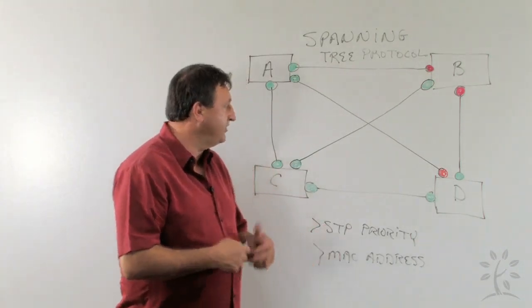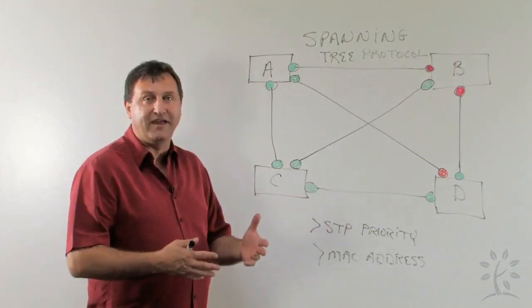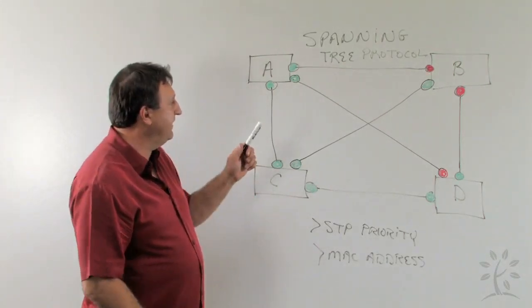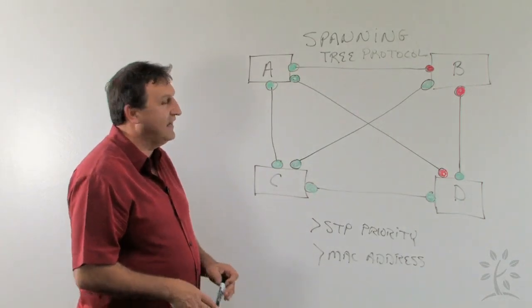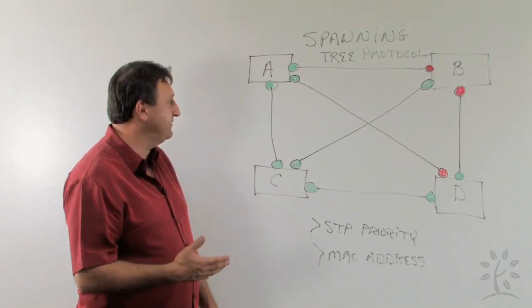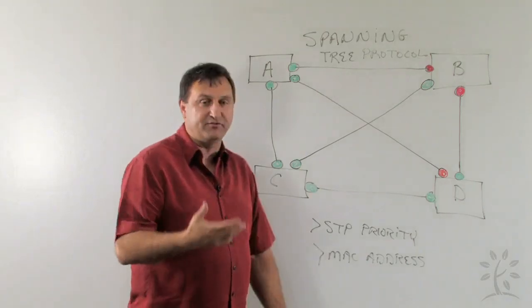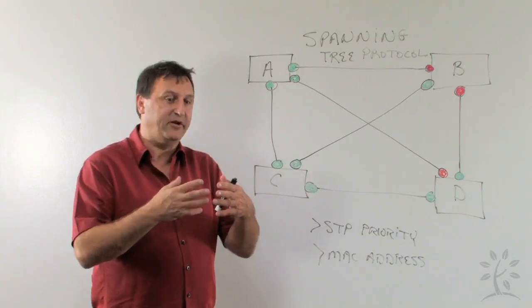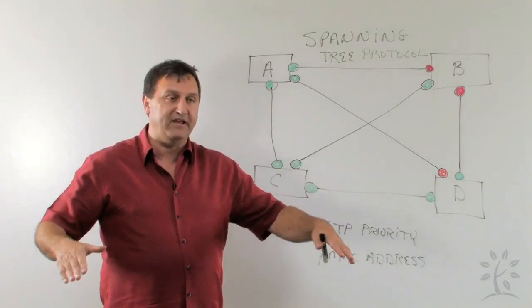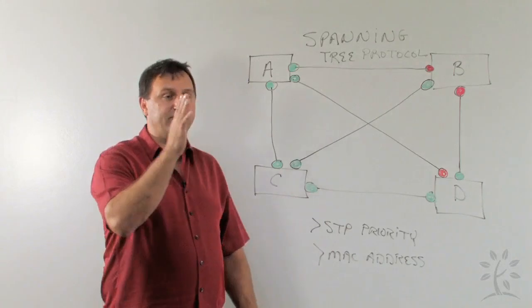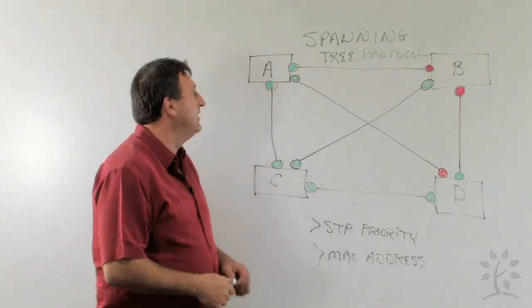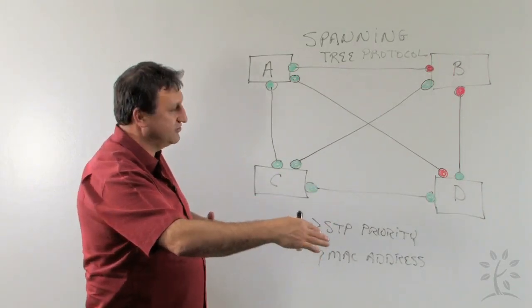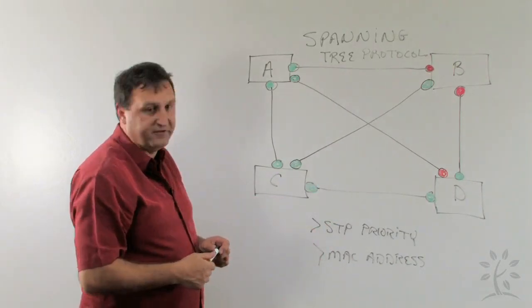So basically that's what Spanning Tree does for us. It provides for redundancy while preventing us from having switching loops. Basically the concept of the algorithm for Spanning Tree is based off an election process. The term Spanning Tree comes from this idea that we are going to create this Spanning Tree that's going to have one path all the way up through its root and through the trunk. So the term Spanning Tree basically means we can continue to span this tree but it's going to ensure that we only have one path through this entire environment.